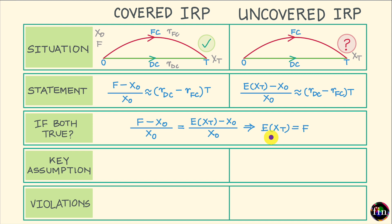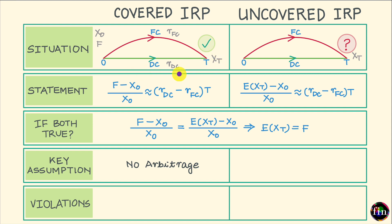Now let's look at the key assumptions backing each parity. For covered interest rate parity, the key assumption is no arbitrage. We entered into a forward-based hedge, eliminating the uncertainty of XT, and arrived at the relationship between F, X0, and the interest rate differential based on no arbitrage. If in practice this relationship is not followed, it amounts to an anomaly, and arbitrageurs can profit by putting in suitable trades.